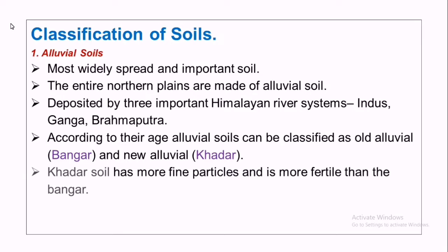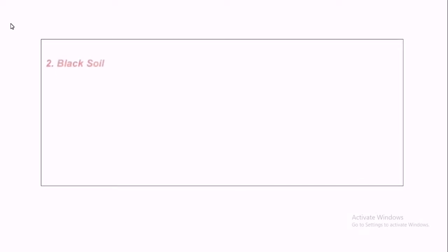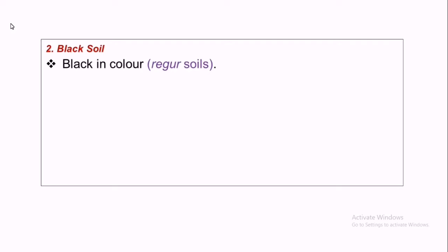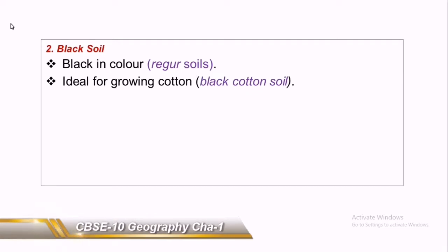Khadar has finer particles and is more fertile. Due to its high fertility, regions of alluvial soil are intensively cultivated and densely populated. The second type of soil is black soil. It is black in color, also called regur soil, and is the ideal soil for growing cotton — which is why it is called black cotton soil.